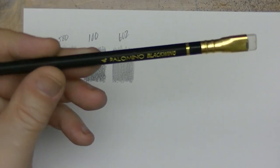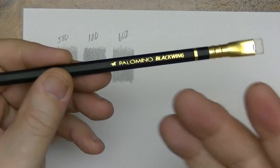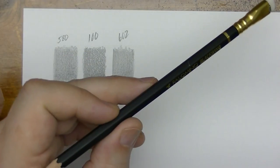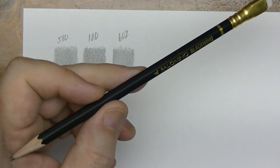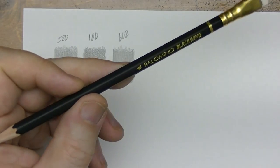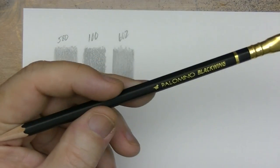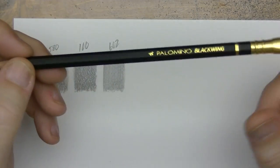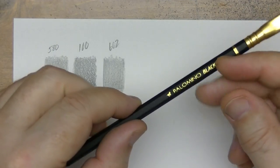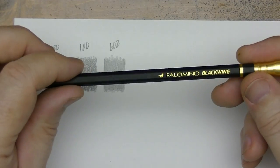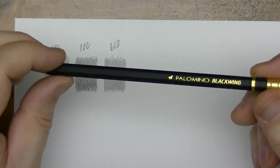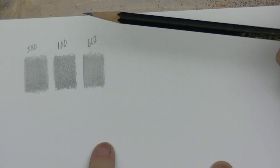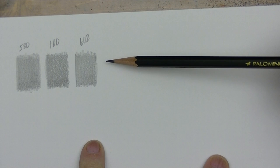Now here's the Blackwing itself, the original. I shouldn't say original because the original of course was the Eberhard 602 pencil which I don't have one of those originals, but when Blackwing came back after Cal Cedar took over this was the first one they released. We just call it the Blackwing black. Okay anyway let me just go ahead and put that down and then we have something to compare there.